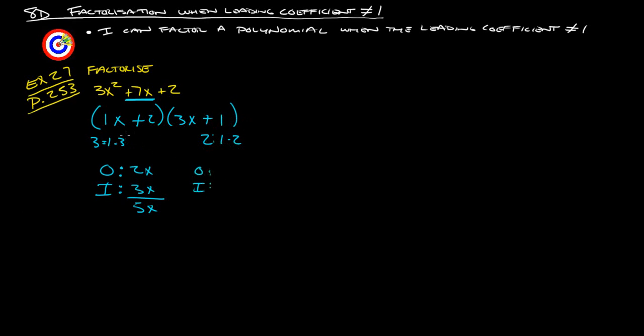So, 1x times 1 is 1x, and then 2 times 3x is 6x. When you add that together, you get 7x, which is what we wanted. So, then we know that these are the correct factors of this here.